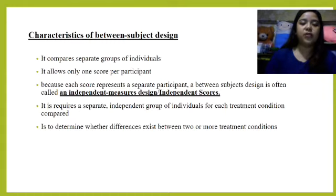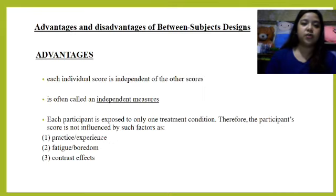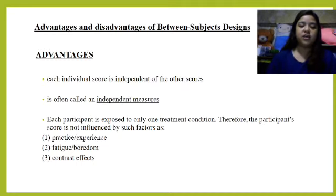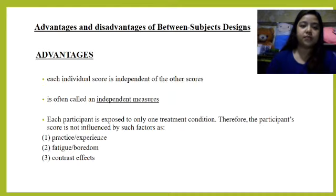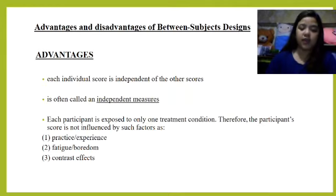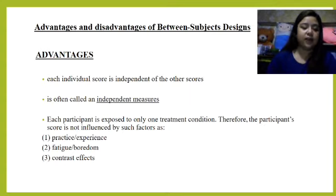The goal of Between Subject Design is to determine whether differences exist between two or more treatment conditions. The advantages are: each individual's score is independent of the others' scores, which is why it is also called independent measures. Each participant is exposed to only one treatment condition. Therefore, the participant's score is not influenced by factors such as practice or experience gained in other treatments, fatigue or boredom from participating in a series of treatments, or contrast effects from comparing one treatment to another.